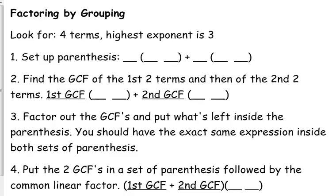Factoring by grouping. Here are the things to look for. You want to look for four terms. We haven't factored anything with four terms yet. We factored three terms and two terms, but not four terms yet. So you're looking for a four term polynomial with the highest exponent of three. Technically it could be more, but the ones that we're going to deal with are going to be three.